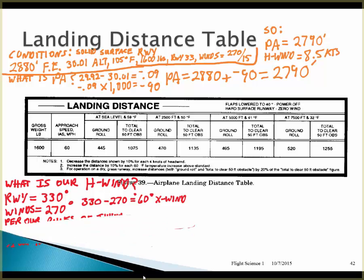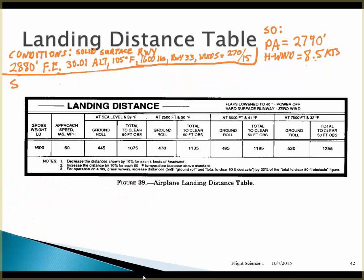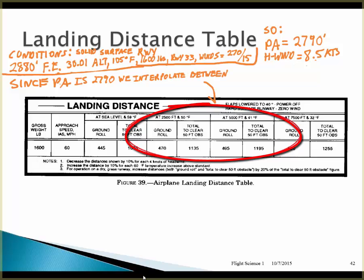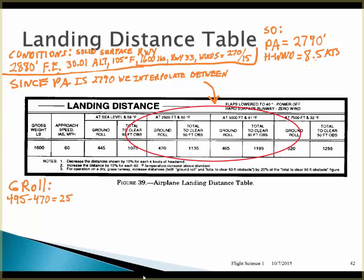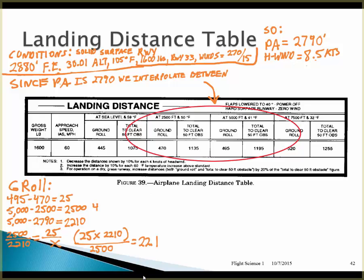Since pressure altitude is 2,790, we interpolate between the 2,500 and 5,000 foot pressure altitude columns of the chart. We know 495 minus 470 are the two different ground rolls — the difference there is 25. Then 5,000 minus 2,500 is 2,500, and 5,000 minus 2,790 is 2,210. We set up our proportion: 25 over X equals 2,500 over 2,210. Cross multiplying: 25 times 2,210 divided by 2,500 yields a difference of 22.1. We subtract that from 495 and find a raw ground roll of 473 feet.